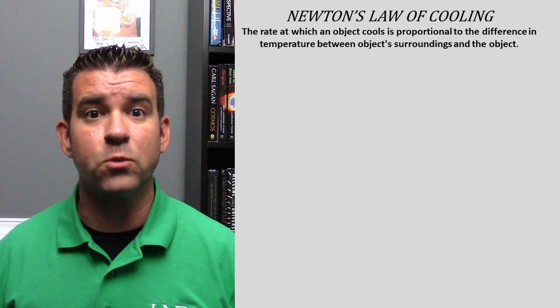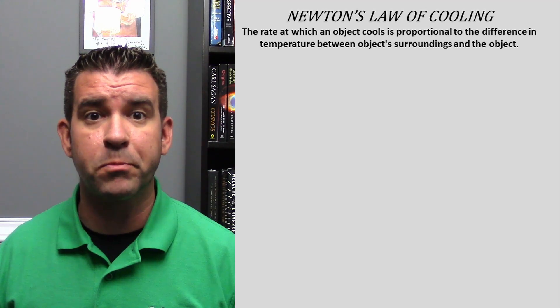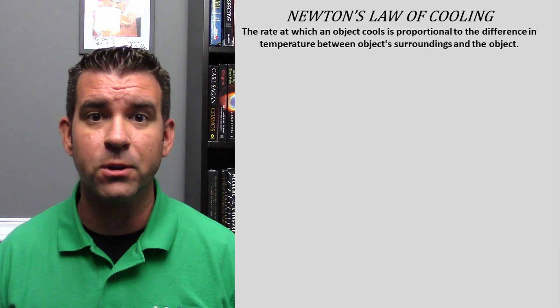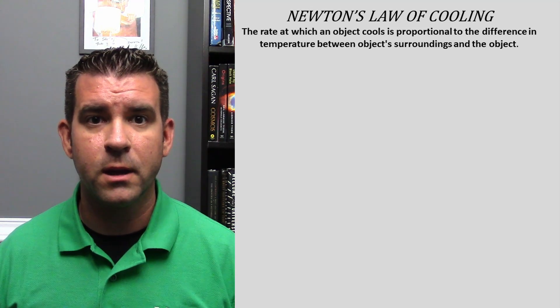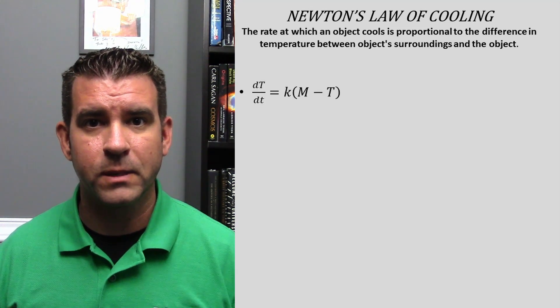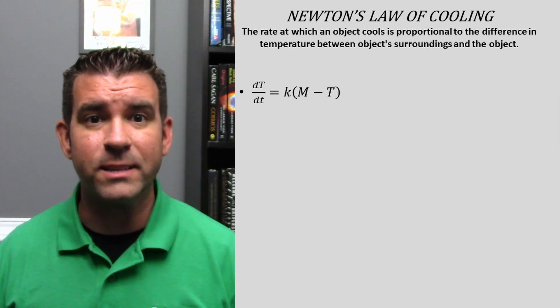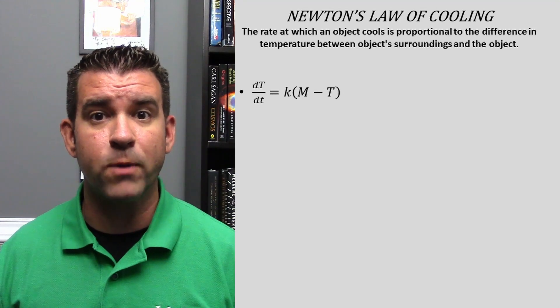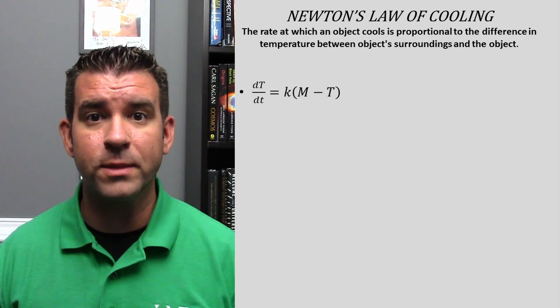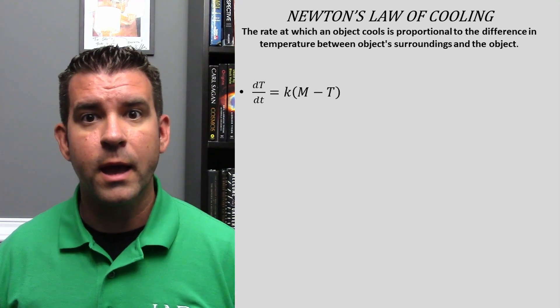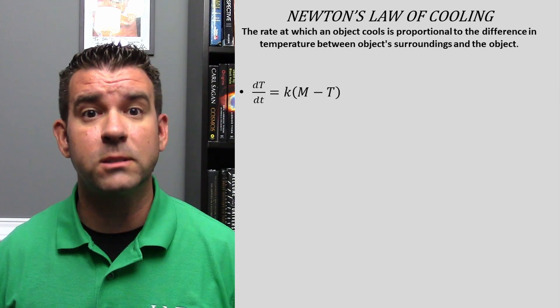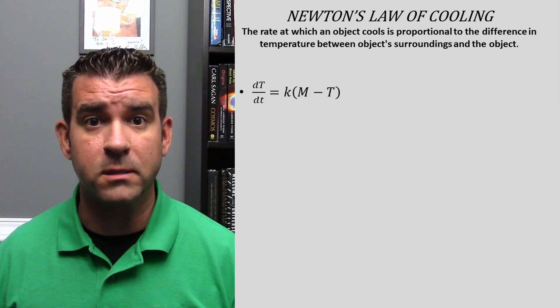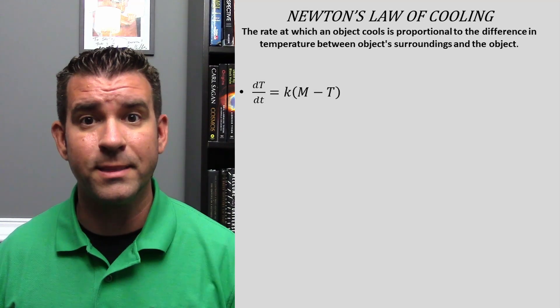Newton's Law of Cooling states that the rate at which an object cools is proportional to the difference in temperature between the object's surroundings and the object. This can be written as: dT/dt = k(M - T), where dT/dt is the rate of change of the temperature of the body with respect to time. Capital T represents the temperature of the body — in this case, the dead body. Little t represents time. K is some constant, and M is the temperature of the surrounding area — in this case, the room. This gives us a first order linear differential equation.